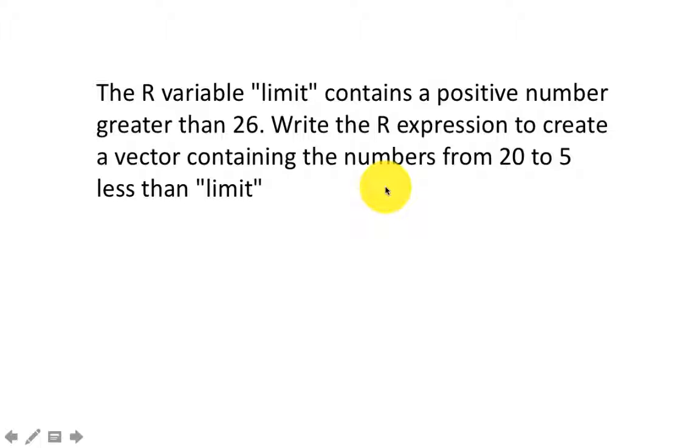The R variable limit contains a positive number greater than 26. Write the R expression to create a vector containing numbers from 20 to 5 less than limit. If you did this, you probably got 20:limit-5. What I'm stressing here is the fact that you need to put parentheses around limit-5. Otherwise, it will generate 20 to limit and subtract 5 from every element, which is not what we want.